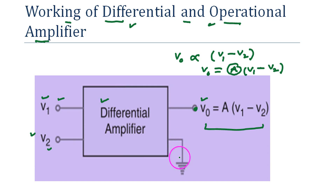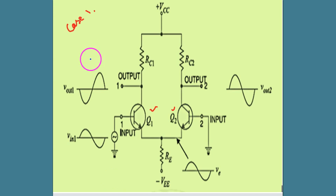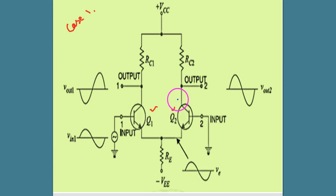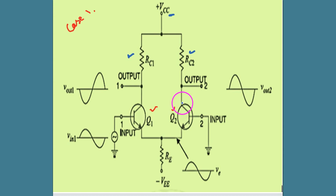This is a circuit diagram for a differential amplifier. We have two transistors Q1 and Q2. This is the emitter terminal of Q1, base of Q1, collector of Q1, emitter of Q2, base of Q2, and collector of Q2. The collectors are connected with resistors RC1 and RC2, and a VCC supply is given to both transistors.